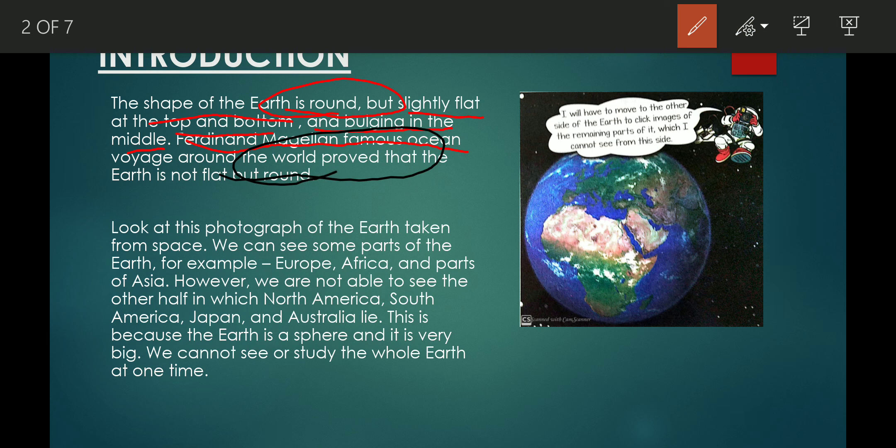Look at this photograph of the earth taken from space. We can see some parts of the earth, for example, Europe, Africa and parts of Asia.